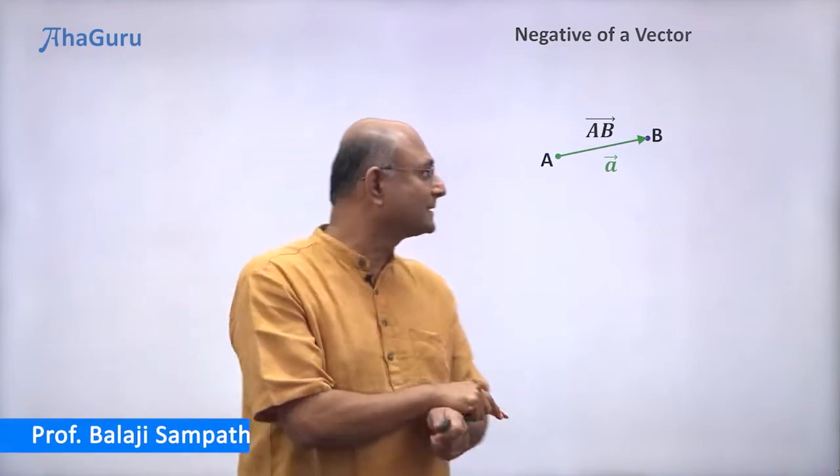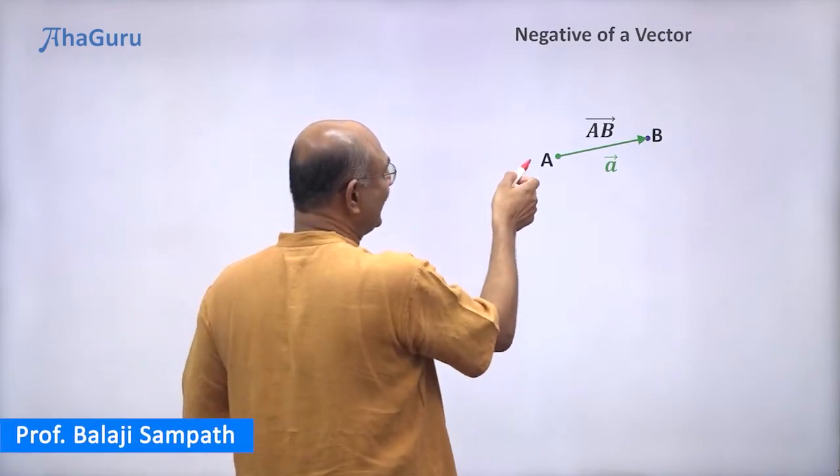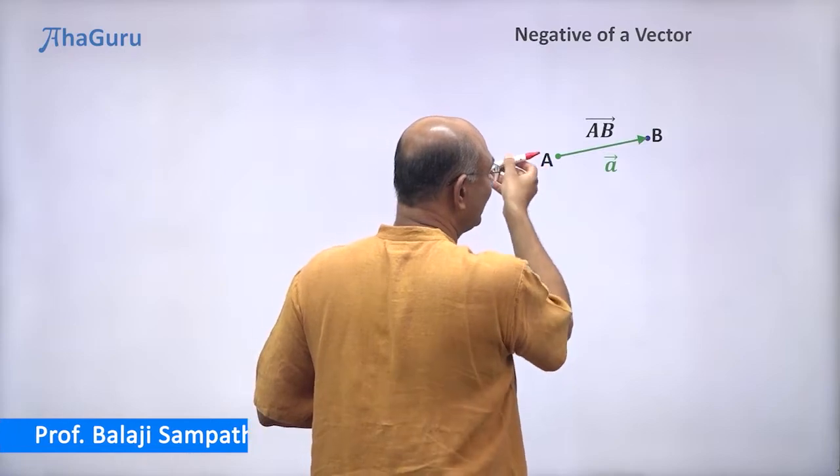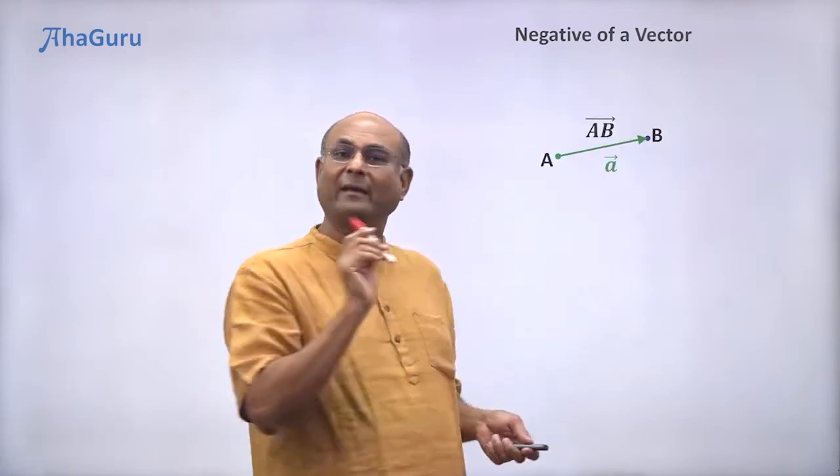Let us now look at opposite vectors. So here I have a vector starting at A and ending at B. So we call this AB vector or I'm going to call it A vector.